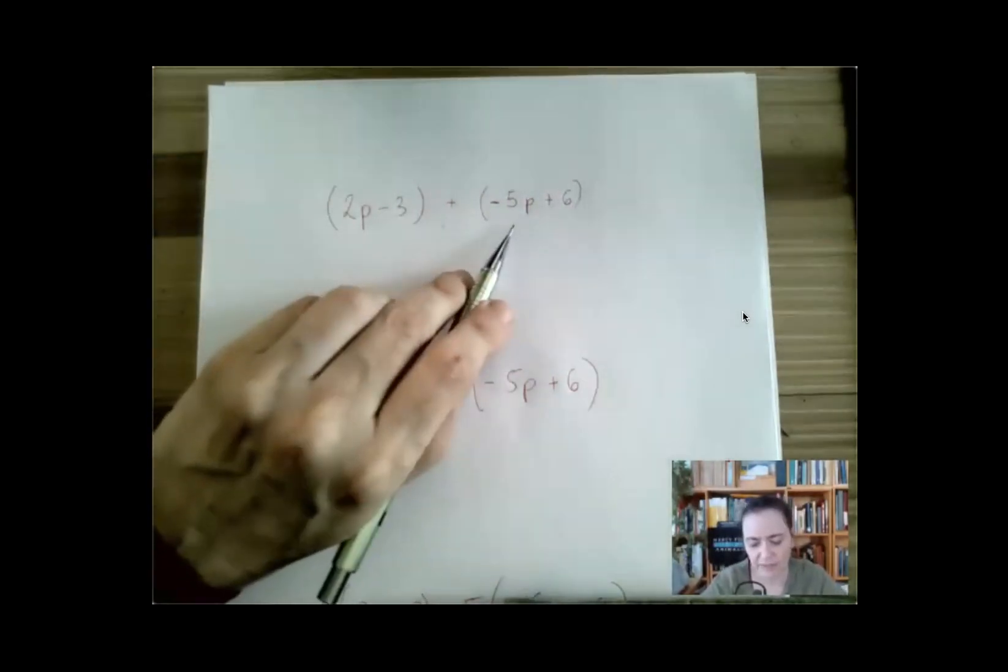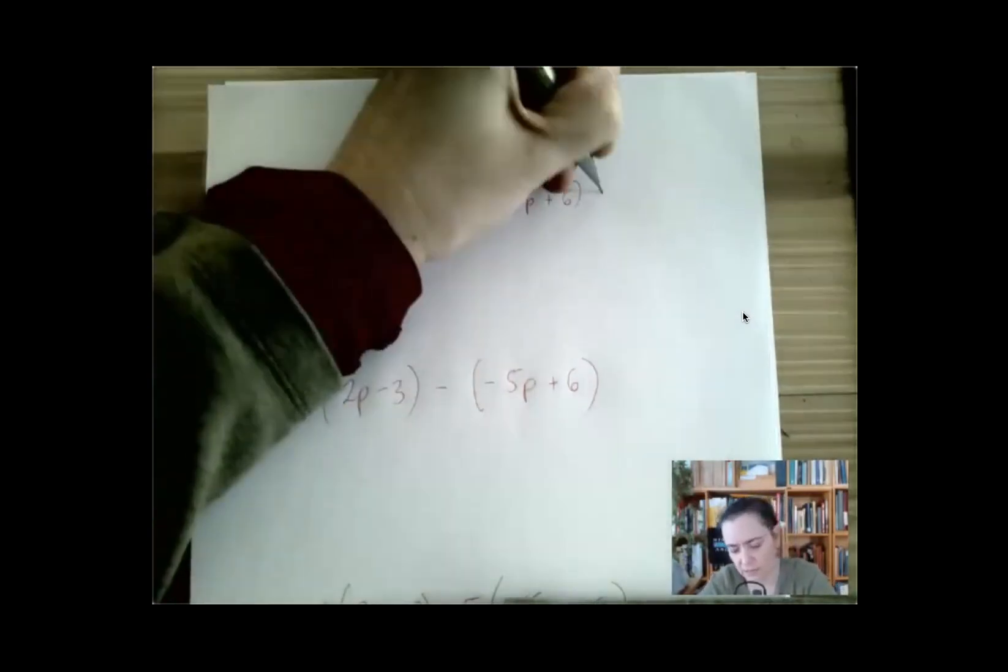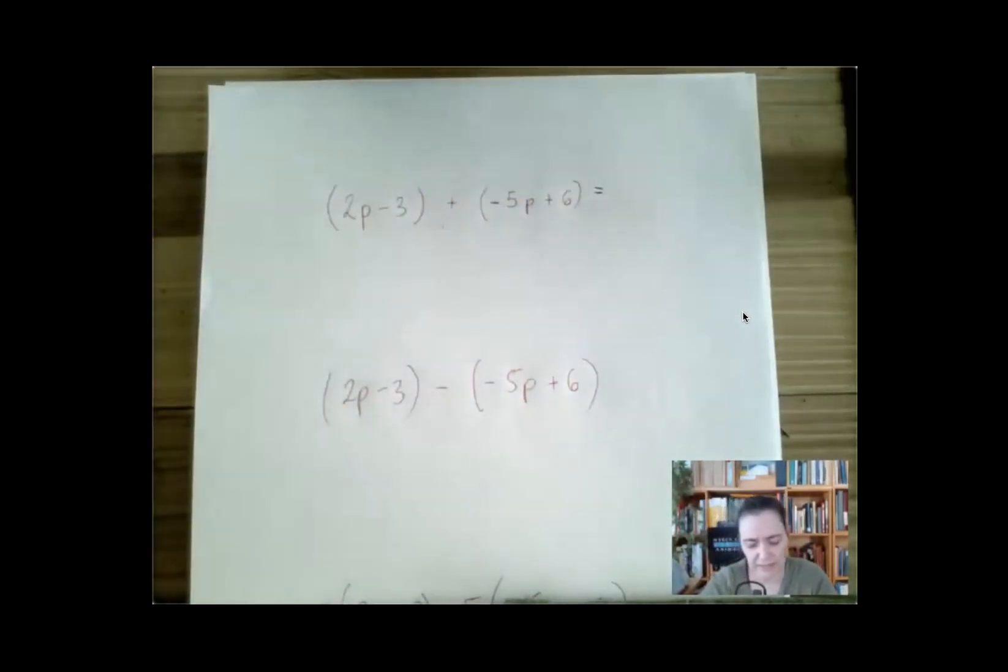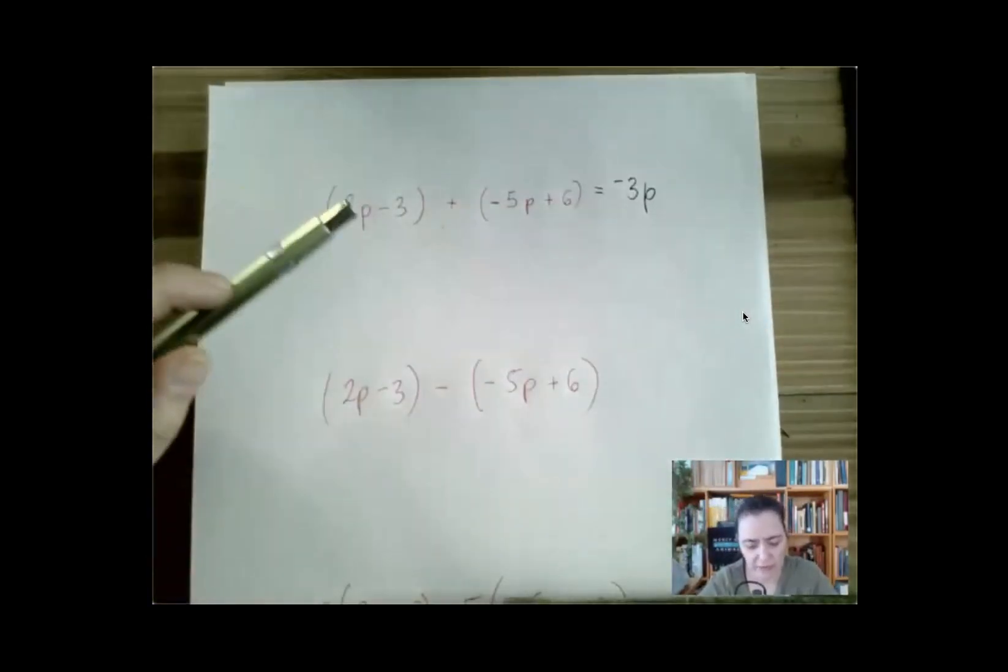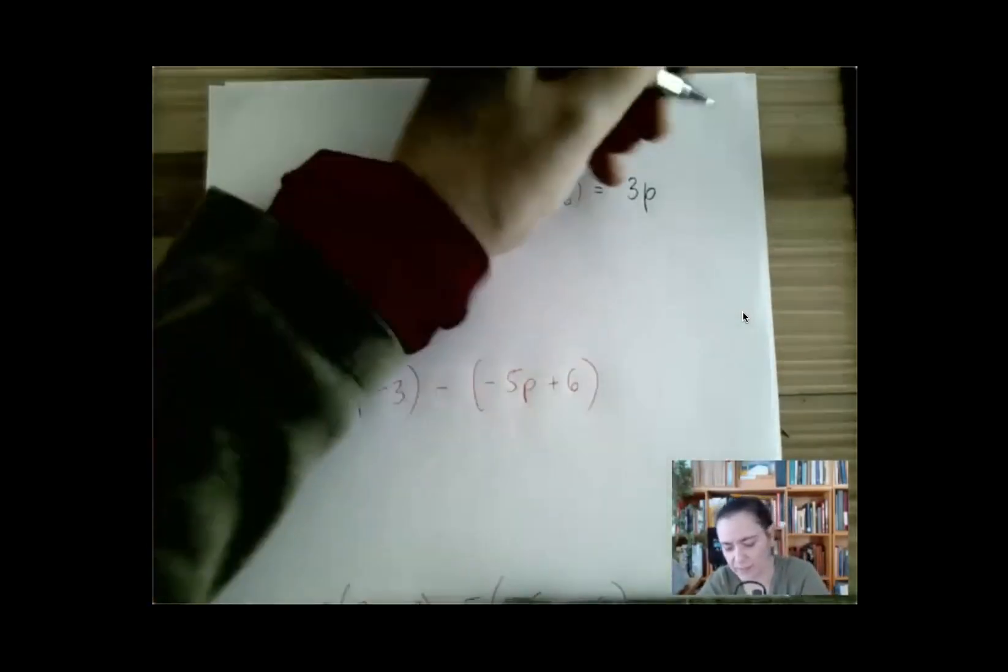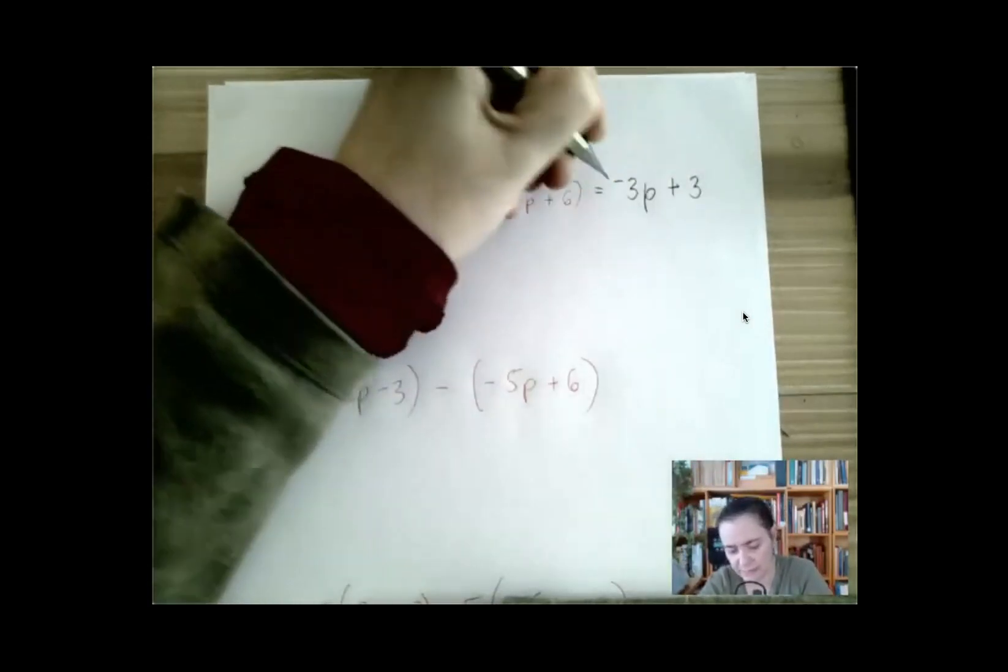2p and negative 5p are like terms. When we combine them, we add 2 and negative 5, that's negative 3, that's how many p we have. And when we add negative 3 and 6, we get plus 3. That's it.